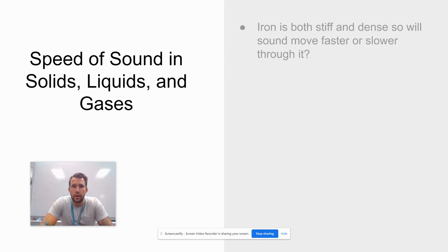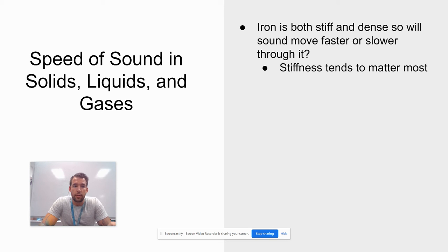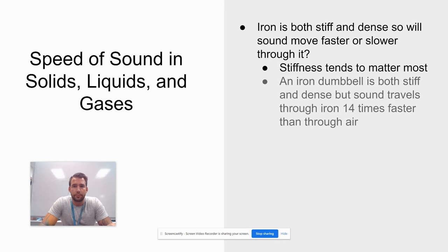But which one matters more? Think of an iron dumbbell. It's both very stiff and rigid, and it's also dense. So which one matters the most? It turns out that stiffness tends to matter most when we're talking about the speed of sound. An iron dumbbell is actually going to have sound that travels through it 14 times faster than through air, just because it is more stiff than air is.